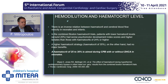Regarding hemodilution and hematocrit level, there is an inverse relationship between hematocrit and cerebral blood flow in neonates and infants. In the combined Boston hematocrit trial, patients with lower hematocrit levels had worse psychomotor development and higher lactates than those with hematocrit greater than 24. A higher hematocrit strategy, on the other hand, had no major benefit. As a rule, a hematocrit of 25 to 30 is aimed for during cardiopulmonary bypass with or without deep hypothermic circulatory arrest.